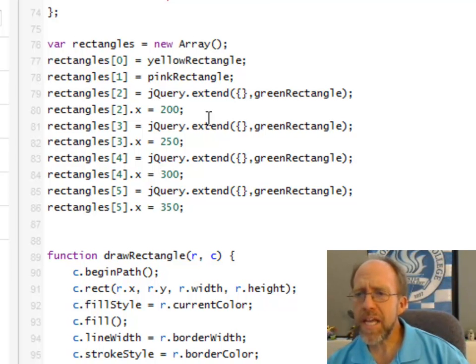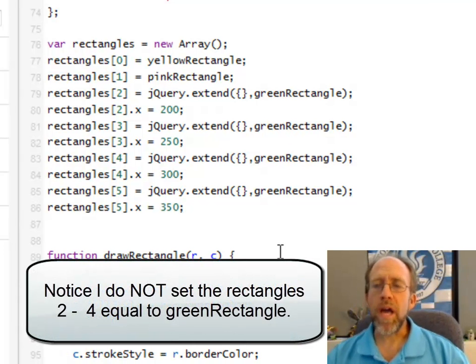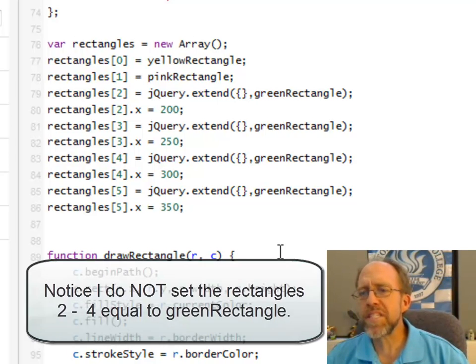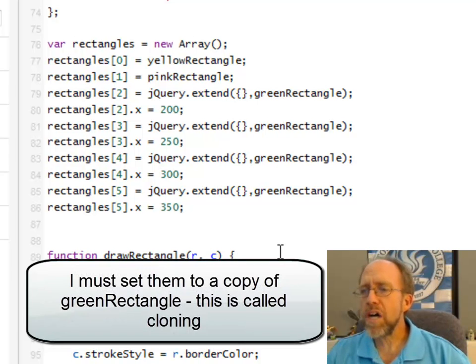And if I were to set rectangle 2 to the green rectangle, rectangle 3 to the green rectangle, rectangle 4 to the green rectangle, they would all be the same rectangle. So, anytime I set the property of any of those rectangles, because they're the same, the properties of all the rectangles in that series will also change.